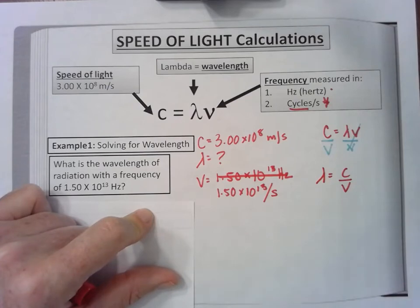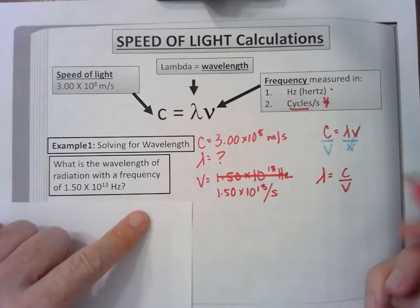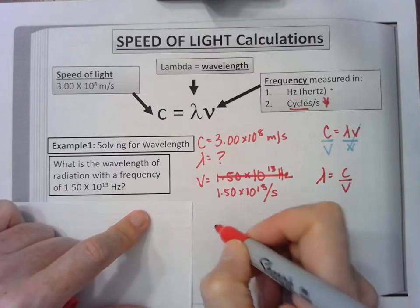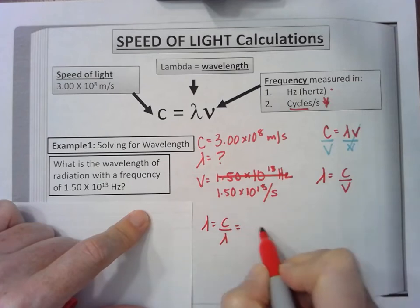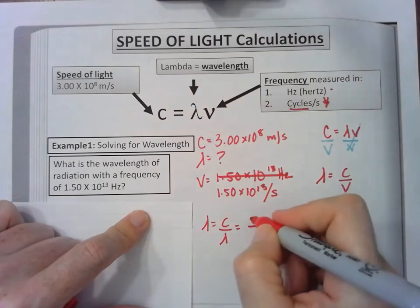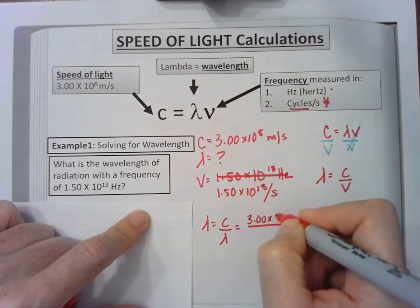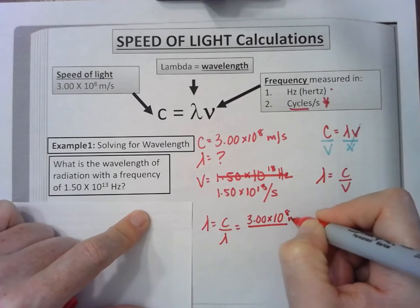The speed of light is on top: 3.00 times 10 to the 8 meters per second. And on the bottom is my frequency: 1.50 times 10 to the 13th per second.